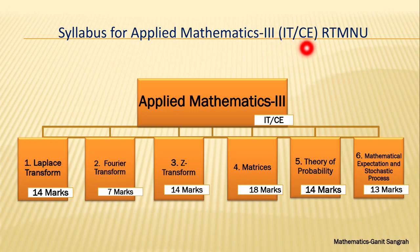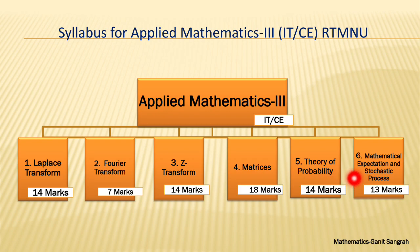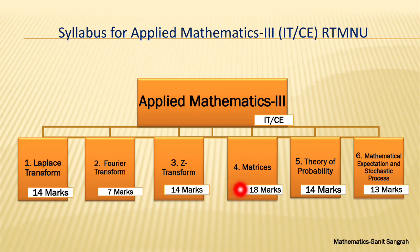So you can see the syllabus of Applied Mathematics 3. The first unit is Laplace Transform, second is Fourier Transform, third is Z Transform, fourth is Matrices, fifth is Theory of Probability, and the sixth is Mathematical Expectation and Stochastic Process. The marks distribution is: Laplace Transform 14 marks, 7 marks allotted for Fourier Transform, Z Transform 14 marks, and Matrices 18 marks — the highest weightage.